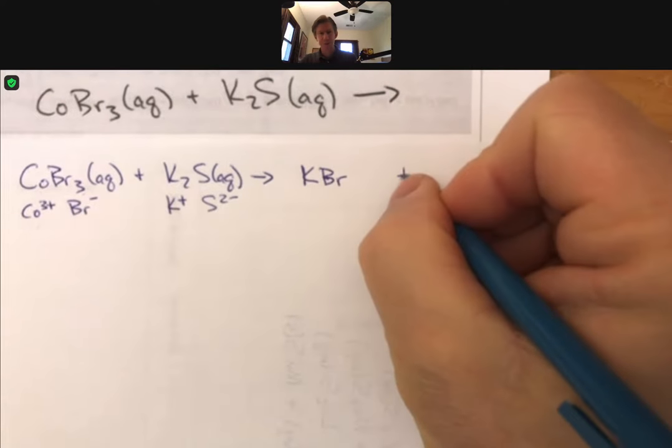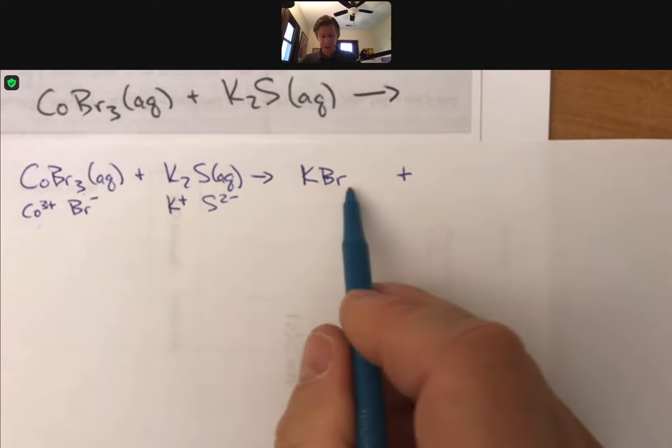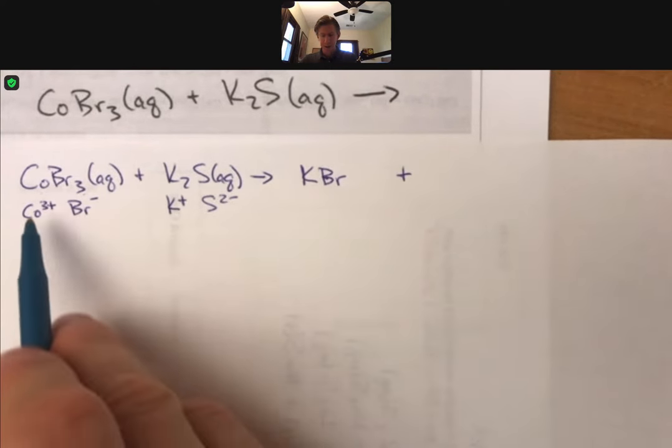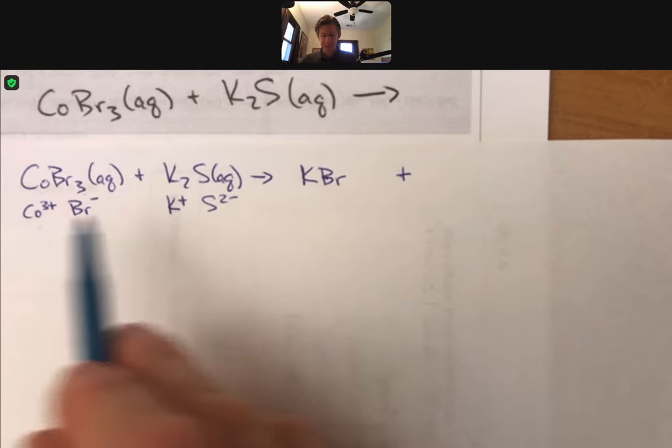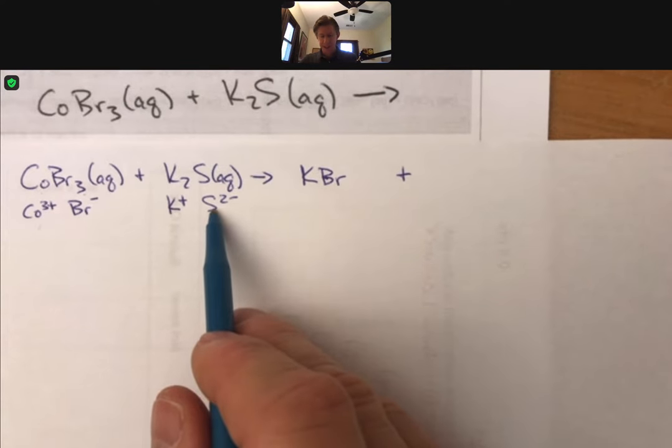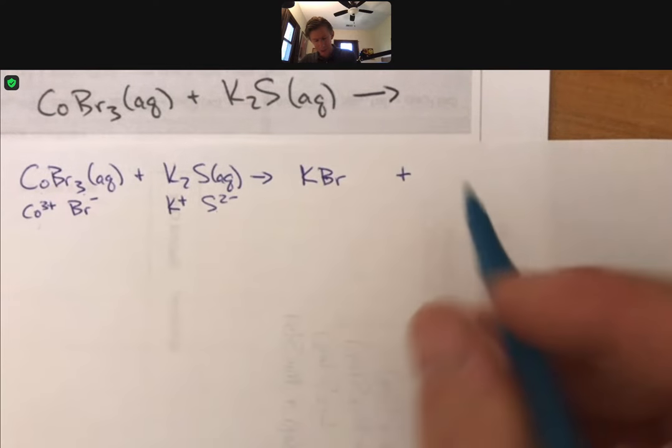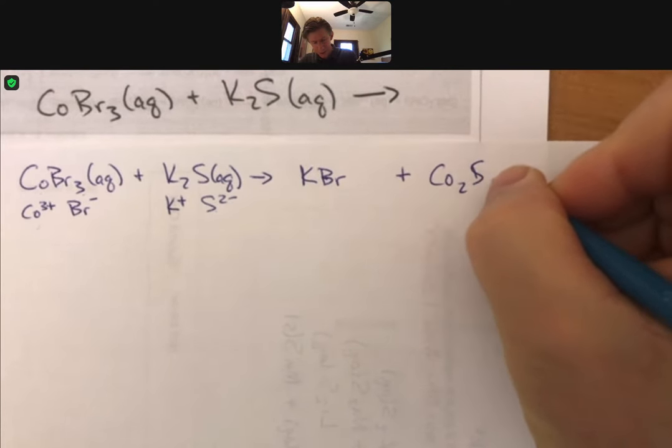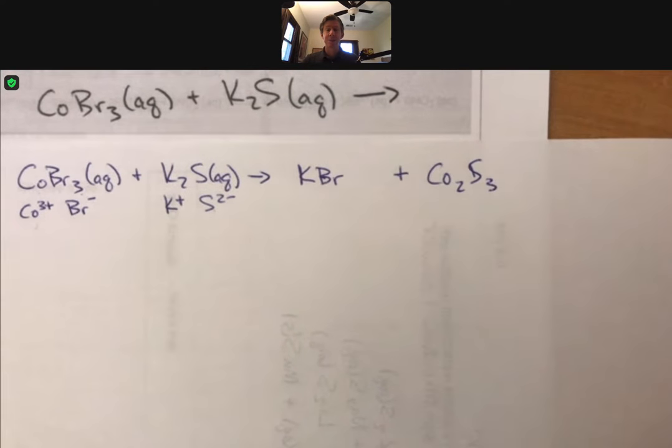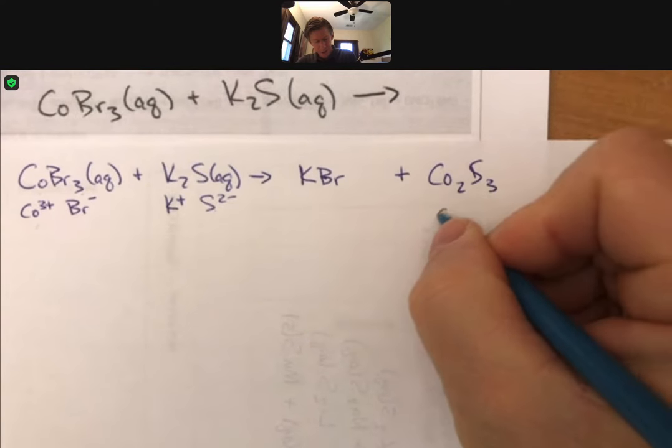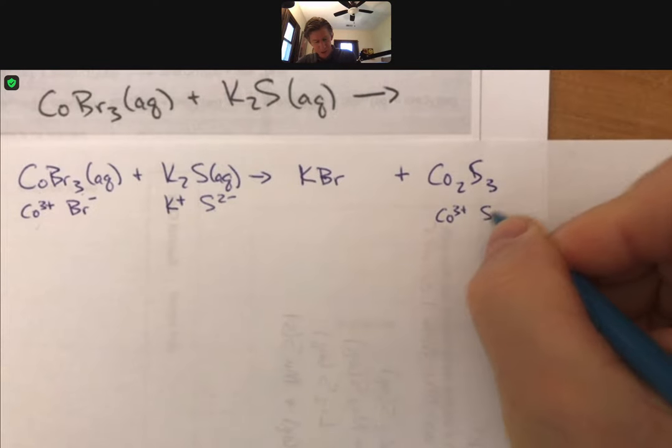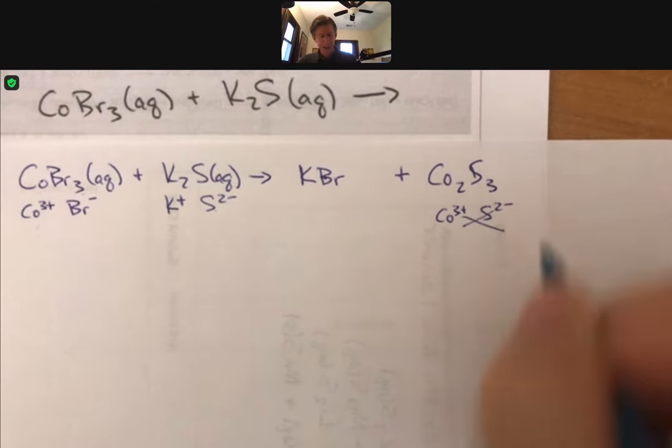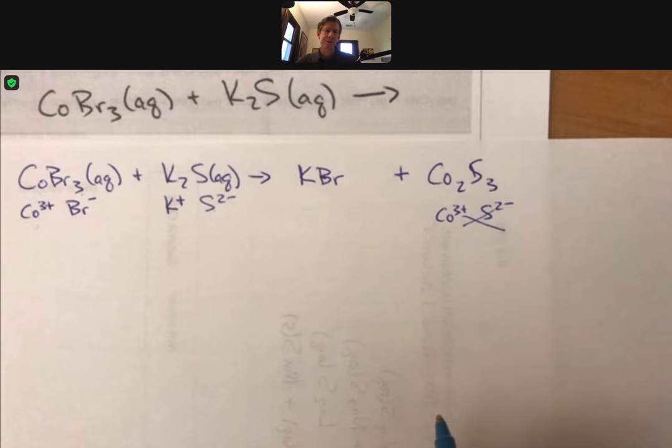And then saving some room to write the phase or state there. Now I've got cobalt three and sulfide. I'm going to crisscross them to end up with cobalt two sulfide three as the subscripts. And if I think about this, this is going to be cobalt three plus, sulfide two minus. And I've just crisscrossed them to get their subscripts.